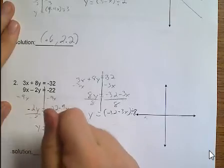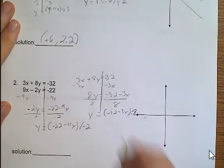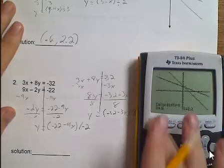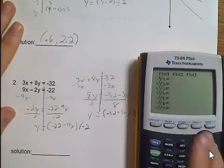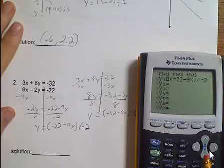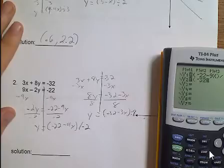We're going to go ahead and put these into our graphing calculator. Parentheses, negative 22 minus 9x. And parentheses, negative 32 minus 3x, close it, divide it by 8. We graph.